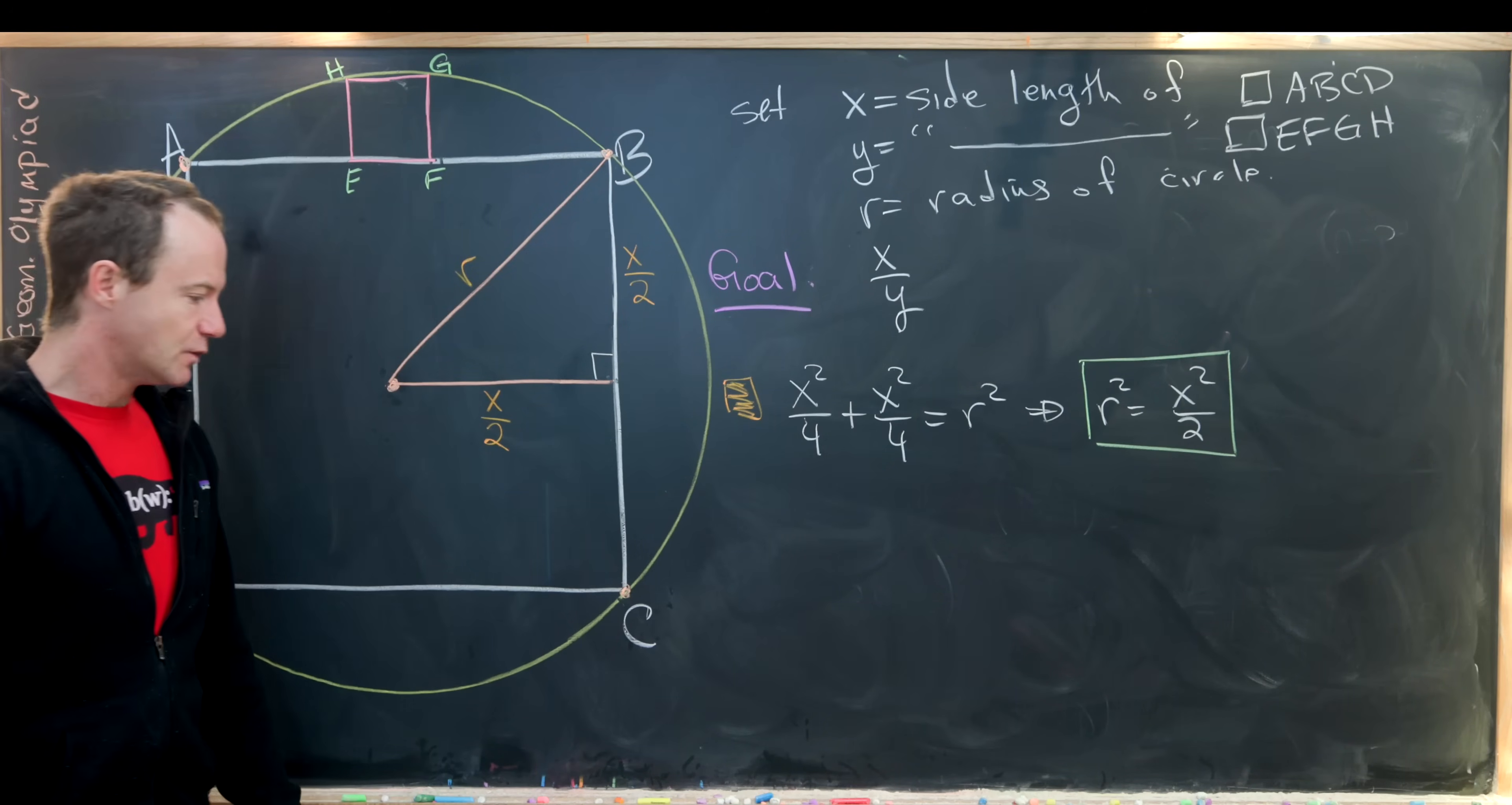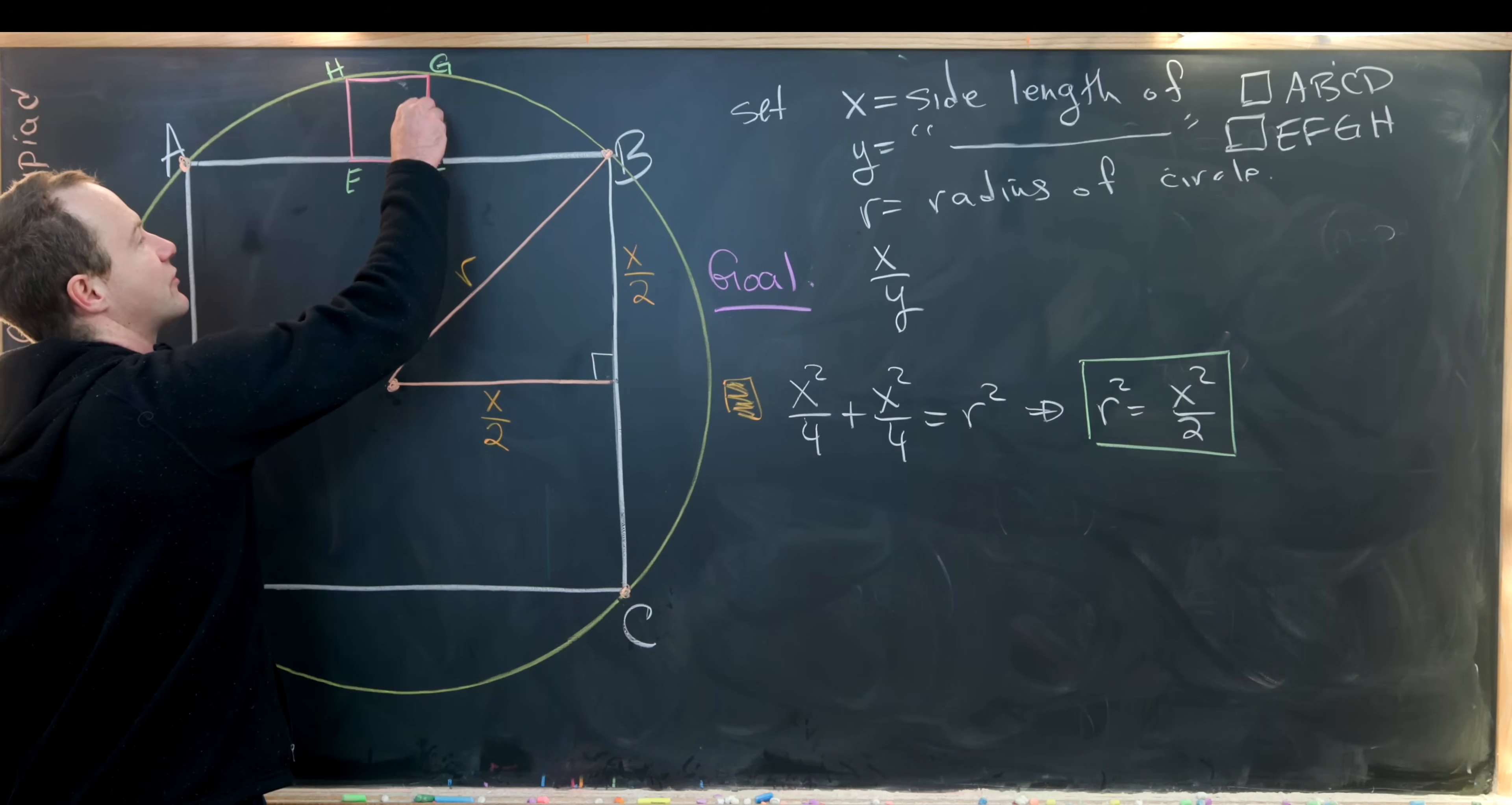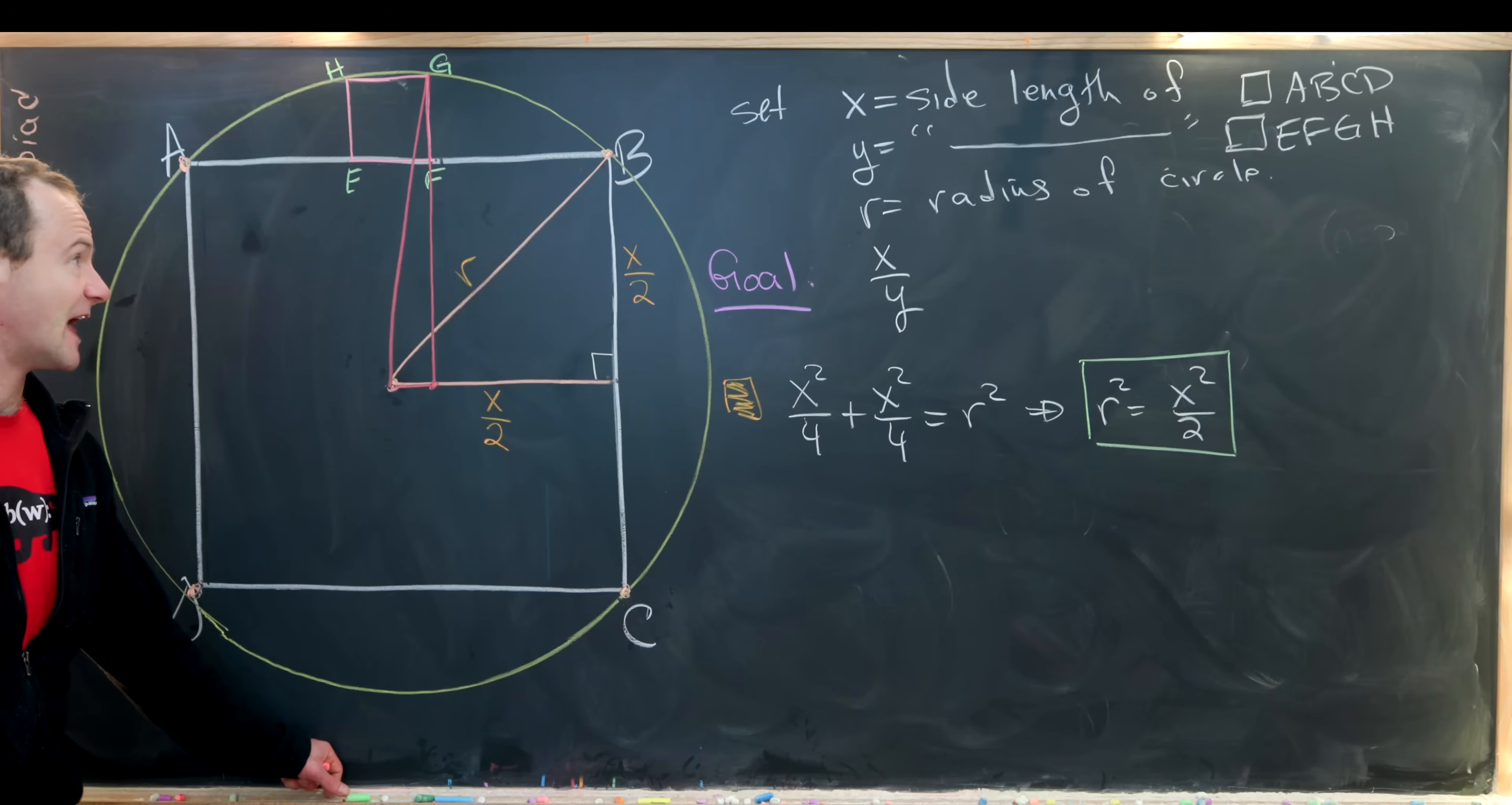So now that we've got that, let's see what triangle we can introduce into this situation in order to compare X and Y. I think maybe the best one looks like this. Let's draw a vertical line through GF down to this line right here. So it's going across and up like this. So we've created another triangle.